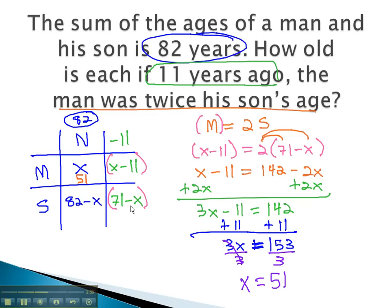The man, or x, is 51. To find the son, we simply do 82 minus the 51, and we get 31. The man is 51, the son is 31.